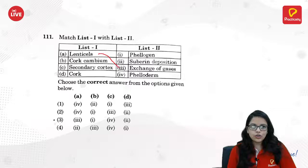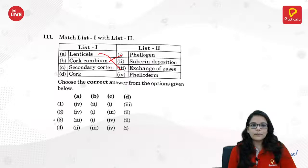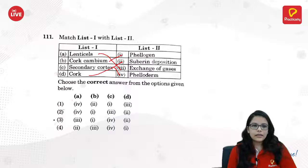Lenticels are used in exchange of gases. Cork cambium is phellogen. The secondary cortex is phelloderm, and cork has suberin deposition. The answer is A3, B1.